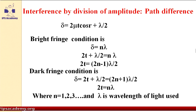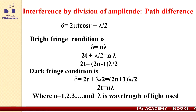There is a standard formula to calculate the bright fringe condition. You should equate the path difference to n lambda when finding the condition of bright fringe. So delta equals n lambda for constructive interference. Here, delta is 2t plus lambda by 2 equals n lambda. Solving this, 2t equals (2n minus 1) lambda by 2.